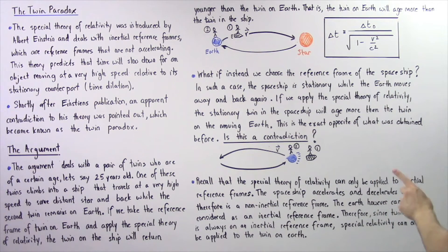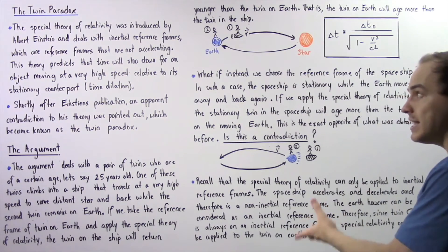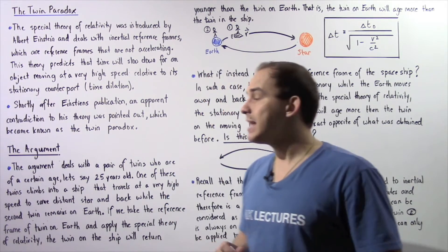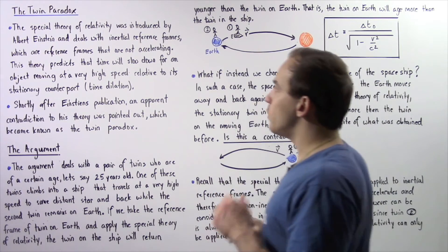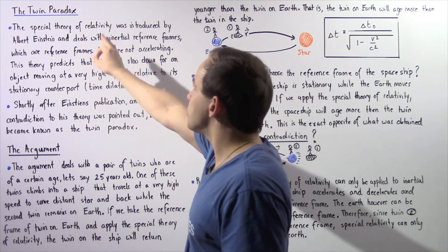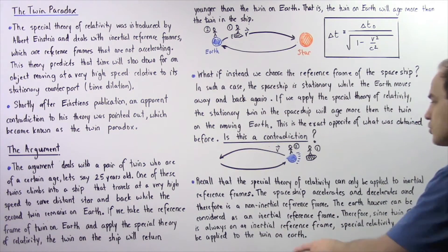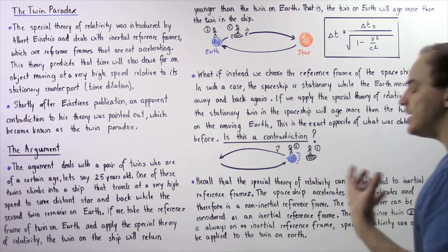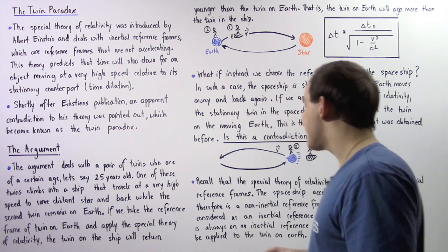This is the exact opposite conclusion from the earlier argument. Is this a contradiction to the special theory of relativity? The answer is no, it's not. The reason is what was stated at the outset: the special theory of relativity can only be applied to inertial reference frames — frames that are not accelerating.